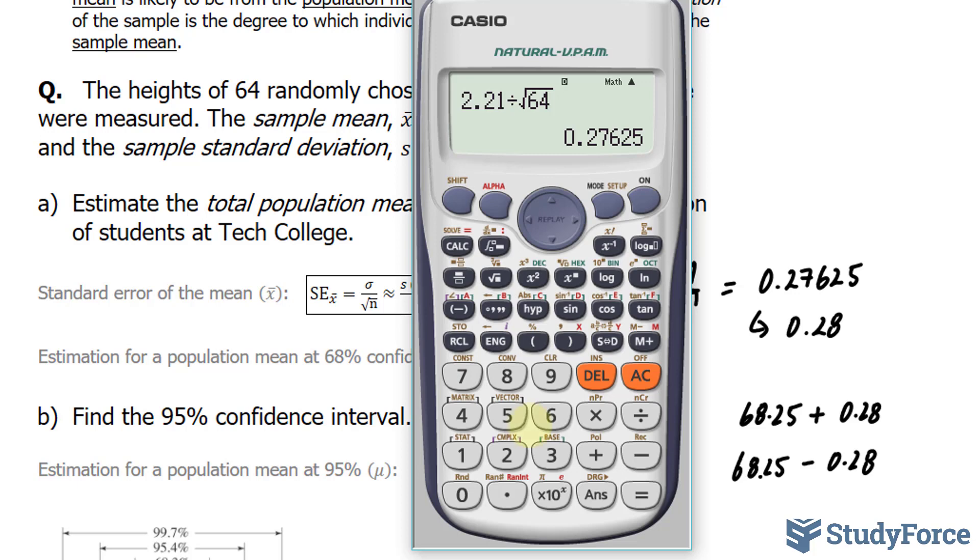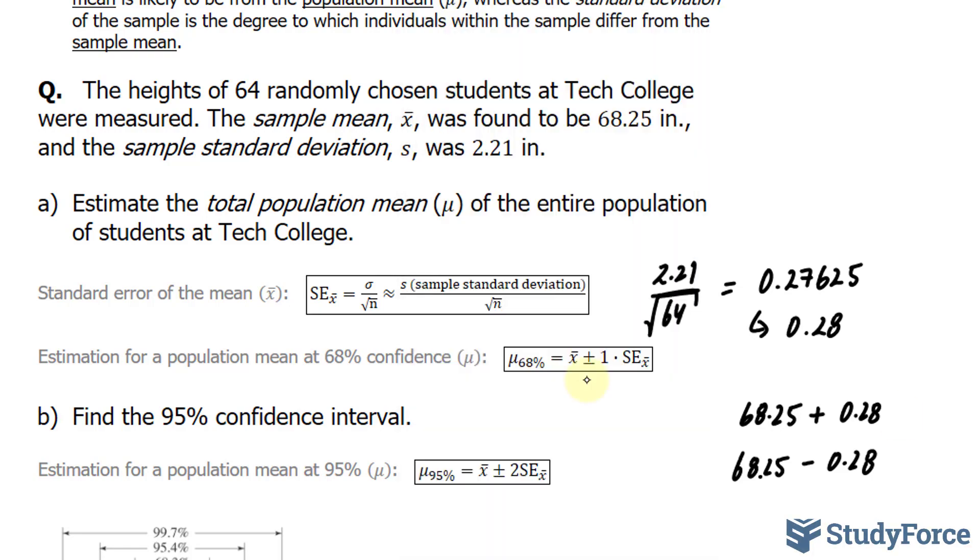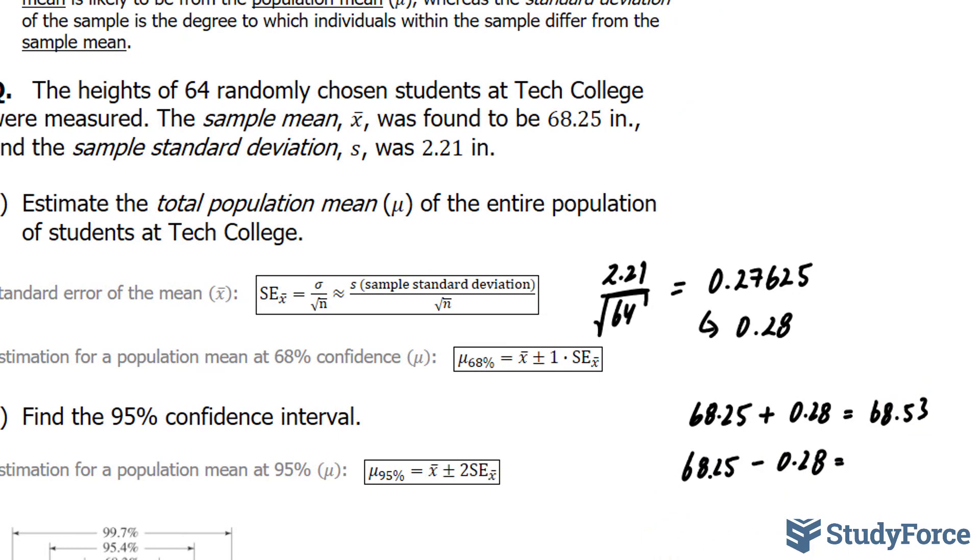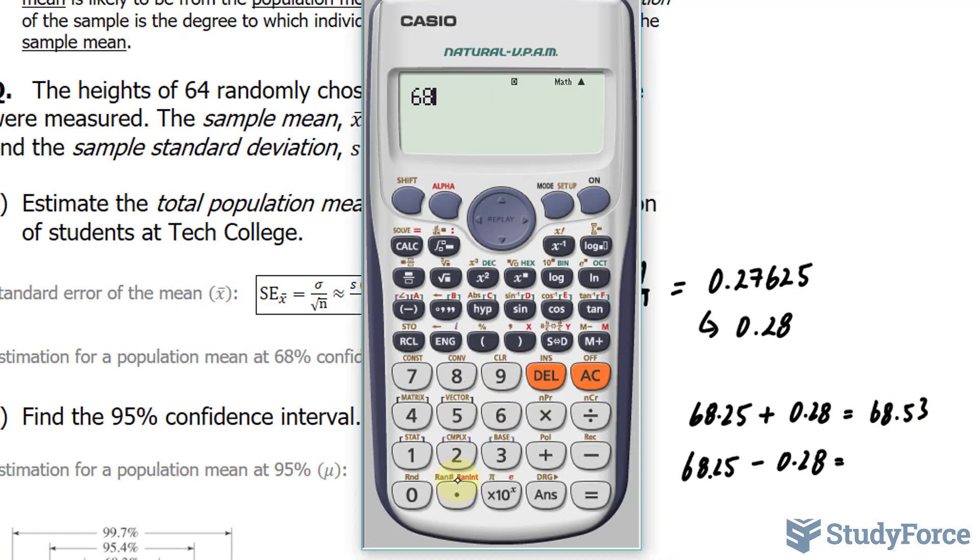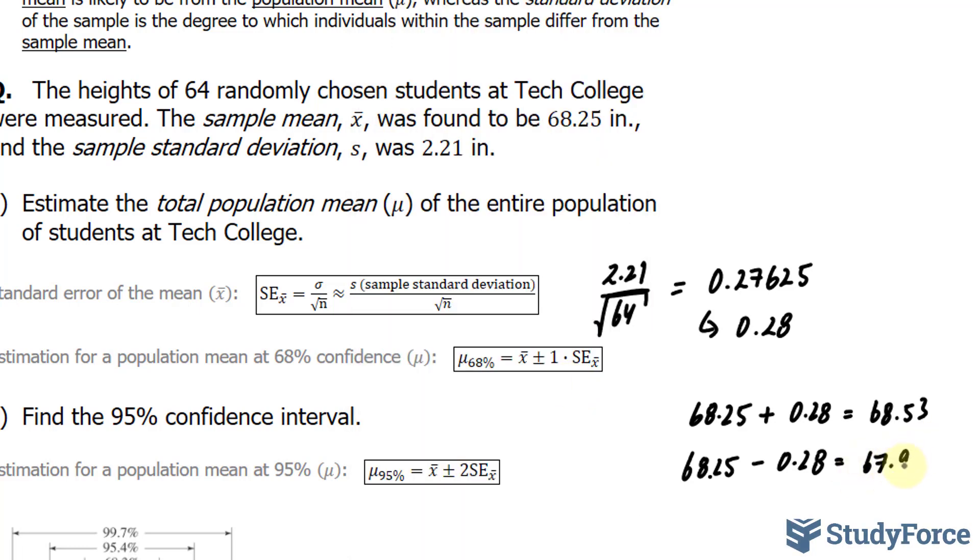So using my calculator, 68.25 plus 0.28. This gives me 68.53. And similarly, 68.25 minus 0.28 gives me 67.97.